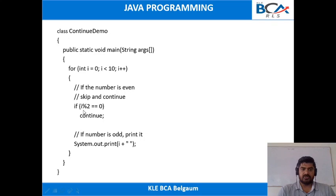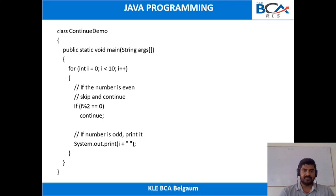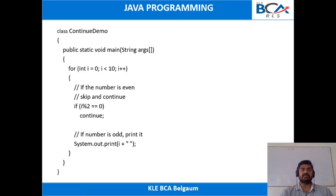Initially consider i is 0. Assume that i is 1: 1 mod 2 equals 0? No, so this condition fails. Next we display that number — the odd number — then increment i. Now i is 2: 2 mod 2 equals 0, the condition satisfies, so it will continue with the next iteration. Now i is incremented to 3. 3 is less than 10, condition satisfies. And 3 mod 2 equals 0? No, so this condition does not satisfy. Next, display that odd number. This is the simple program for printing odd numbers. Whenever i is even, we are skipping the execution.